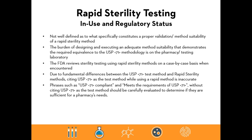In conclusion, it is not well defined what constitutes a proper validation and method suitability for a rapid sterility method. This burden falls on the testing lab or pharmacy to adequately demonstrate that a method is valid, suitable, and shows equivalence to the compendial method. The FDA has reviewed sterility testing methods using rapid technologies on a case-by-case basis. Due to fundamental differences between the compendial method and rapid methods, simply citing USP 71 as the test method is not accurate. Watch for phrases such as 'USP 71 compliant' or 'meeting the requirements of USP 71' on reports even when USP 71 is not cited as the actual method — these need to be evaluated against pharmacy and state board requirements.